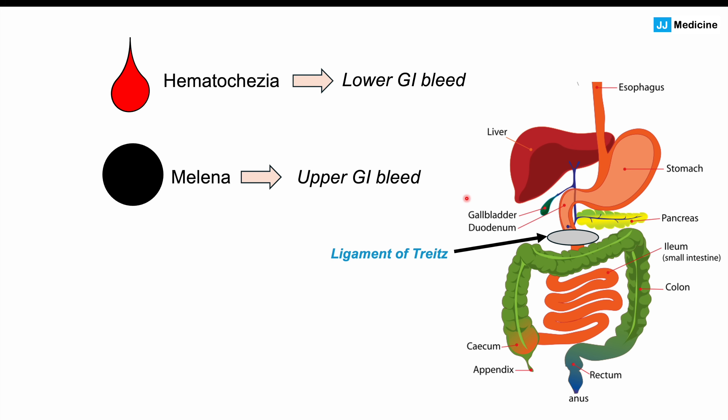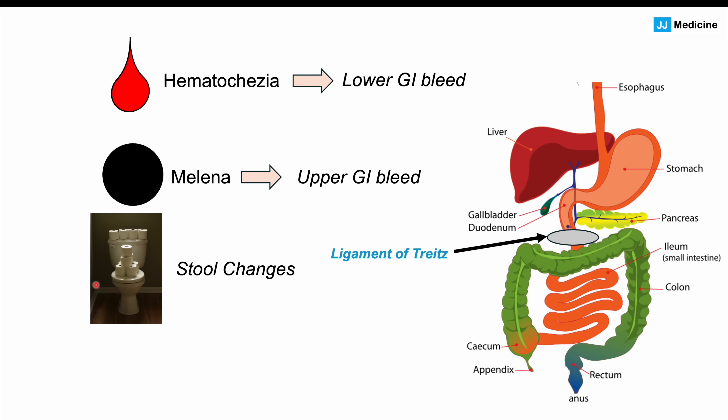Upper GI bleeds from angiodysplasia occur in about 5–10% of cases. We can also see stool color changes, such as maroon-colored stool — an important phrase that may appear on test questions. If a patient with end-stage renal disease presents with maroon-colored stool and iron deficiency anemia, angiodysplasia should be suspected.